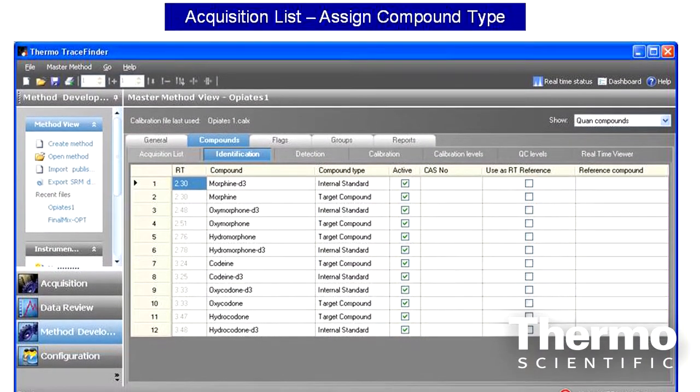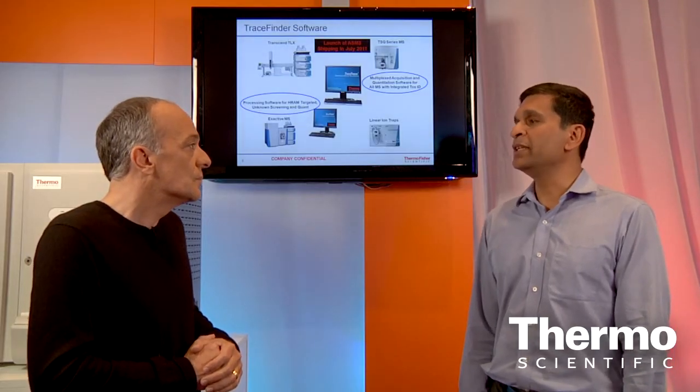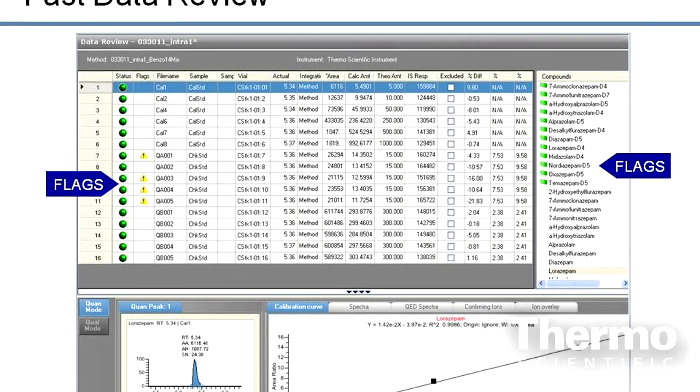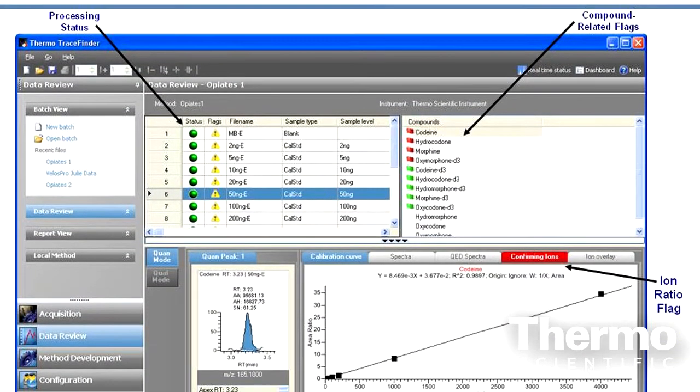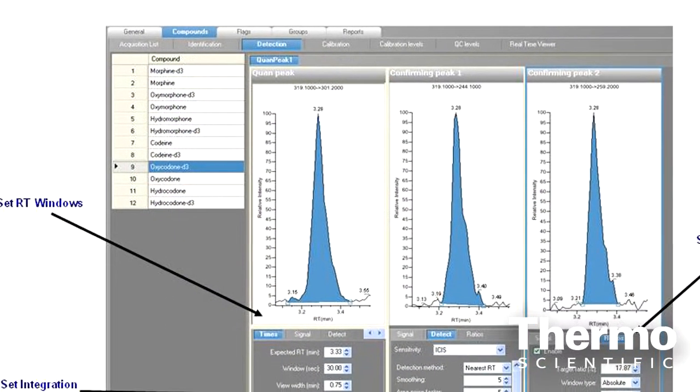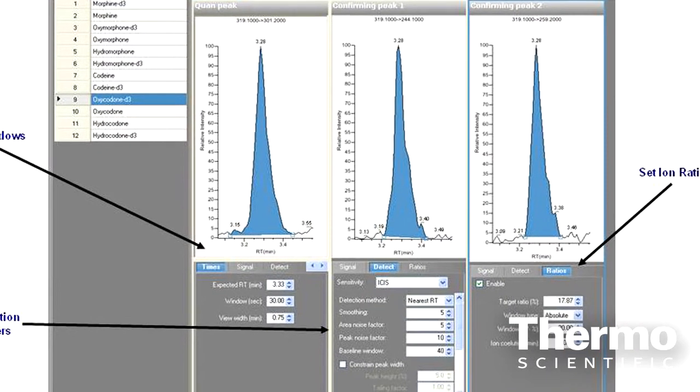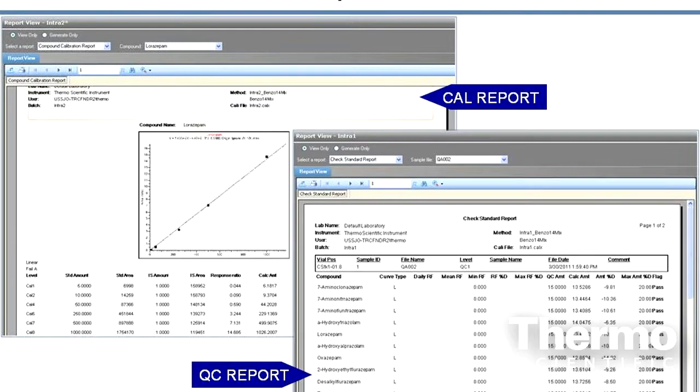As it is designed for quantitative analysis, it has some very unique and exciting features that we added over 1.0 software. Those features include extremely easy to use data review, very clear color-coded flags that tell the operator or the manager what areas they should be looking into when they review the data, and there are more than 50 reporting templates that the manager can use to report the results.